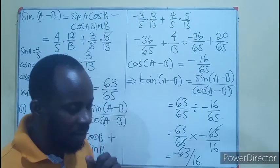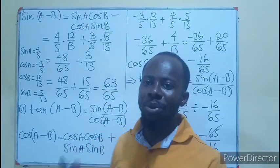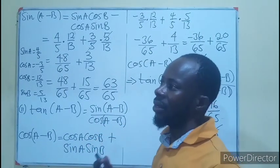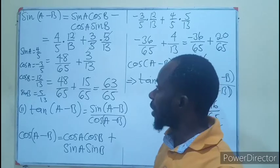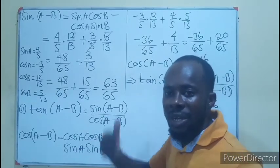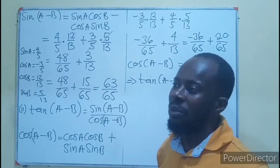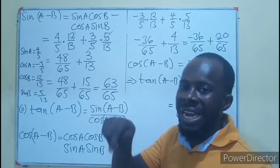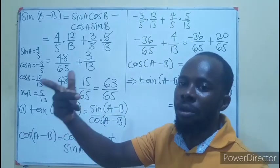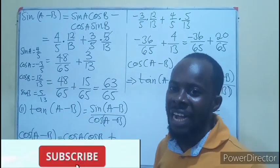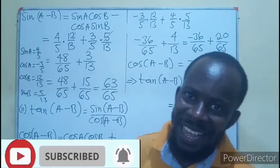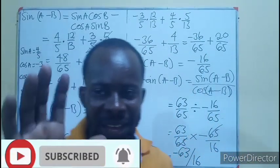So looking at it carefully, we employed the compound angle principle step by step. Bear in mind where the angle is located — whether it's acute, obtuse, or reflex — as this determines the sign of the trig function. Thank you for watching. Like, share, and comment. Bye-bye.